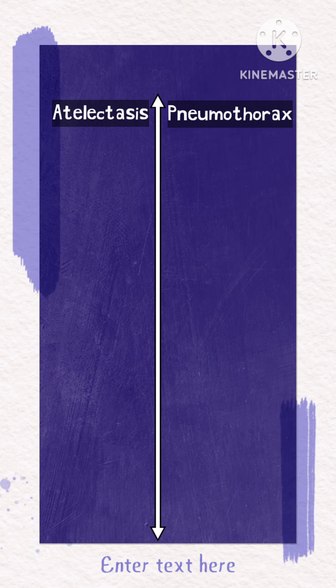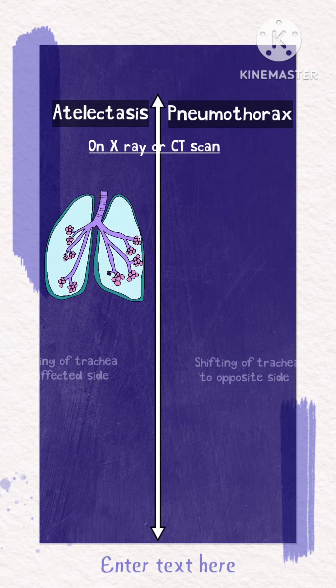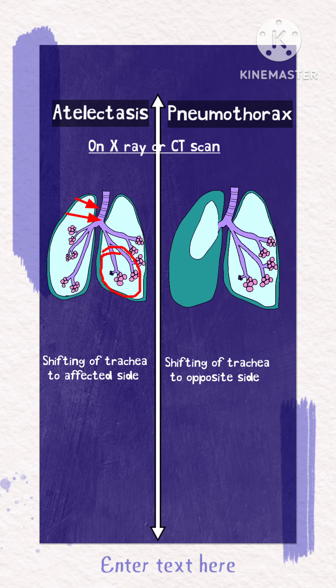On X-ray or CT scan of the chest, in atelectasis there is shifting of the trachea to the affected side, while in pneumothorax the shifting of the trachea occurs on the opposite side.